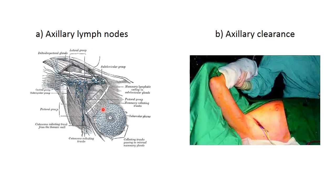The axilla is clinically important in breast disease, particularly malignancies. 75% of the lymph from the breast drains into the axillary lymph nodes. These can be biopsied if breast cancer is suspected. If breast cancer is confirmed, the lymph nodes can be removed to limit the spread of the cancer — a process known as axillary clearance.